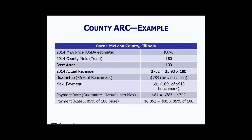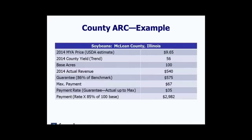Using a USDA 2014 market year average estimate of $3.90 per bushel for corn and a trend yield of 180 bushels per acre with 100 base acres, the 2014 actual revenue calculates to $702 per acre. The guarantee is $783 and the maximum payment is 10% of the $910 benchmark, which is $91. The difference of $81 per acre is below the maximum, so the payment rate is $81. Paid on 85% of 100 base acres, the payment in this example would be $6,852.